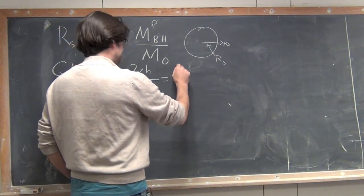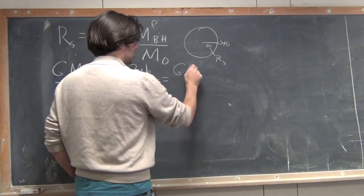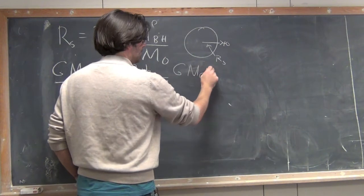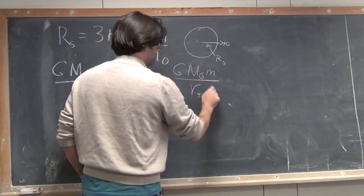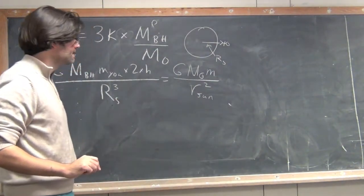So at the surface of the Sun, the gravitational force is just G M Sun M U over radius of the Sun squared.